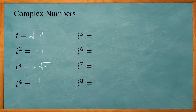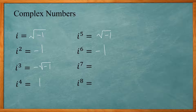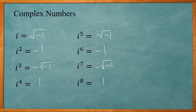This pattern repeats. i to the fifth is the square root of negative 1, i to the sixth is negative 1, i to the seventh is negative square root of negative 1, and i to the eighth is positive 1. It's important to know this pattern repeats every 4 powers, so you start over with the square root of negative 1.